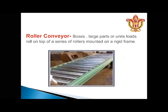A roller conveyor consists of a series of rollers mounted on a rigid frame. Boxes, large parts, and unit loads roll on top of the rollers. These rollers allow large parts and unit loads to be moved easily from one place to another.